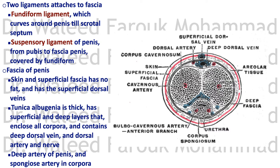So to remember: the superficial dorsal vein is in the superficial fascia, while the deep dorsal vein, the dorsal artery, and the dorsal nerve of the penis are within the tunica albuginea — this is the deep fascia of the penis.